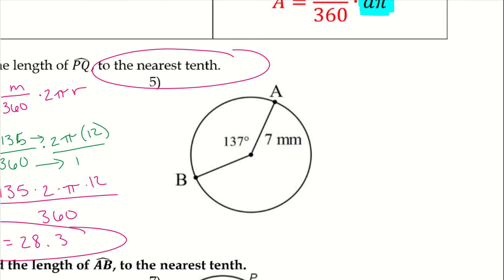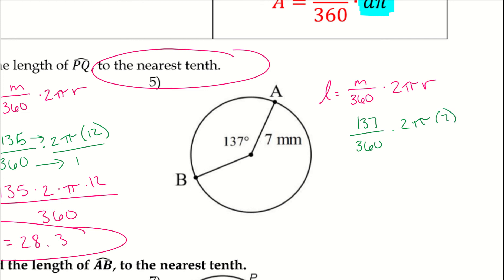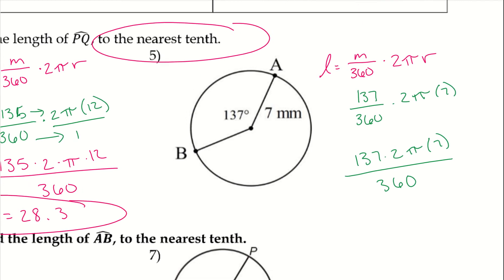For number 5, the arc length equals the measure of the arc over 360 times 2πR. So we have 137 divided by 360 times 2π times 7. Plugging that into a calculator, the length of the arc is 16.7 millimeters.